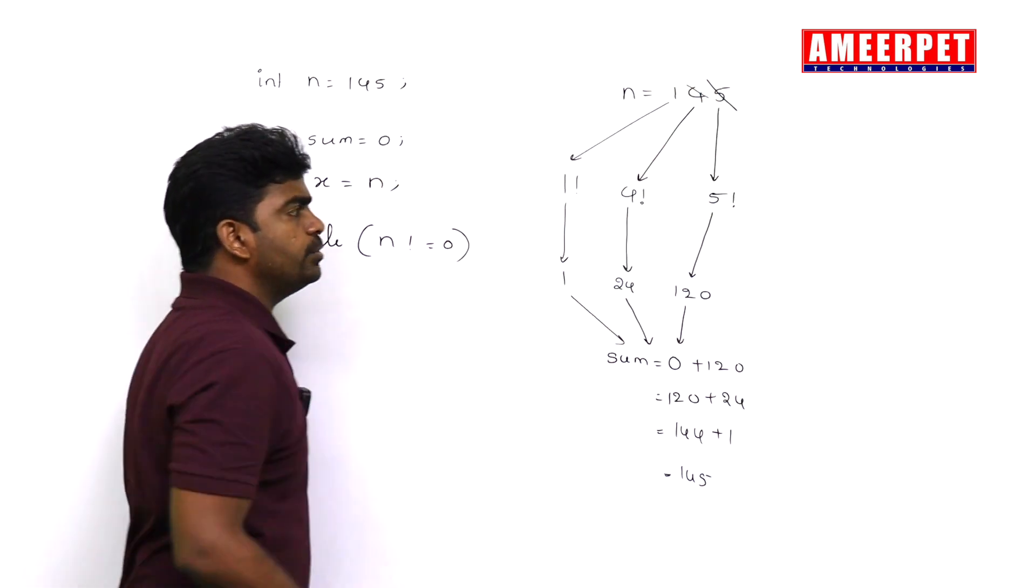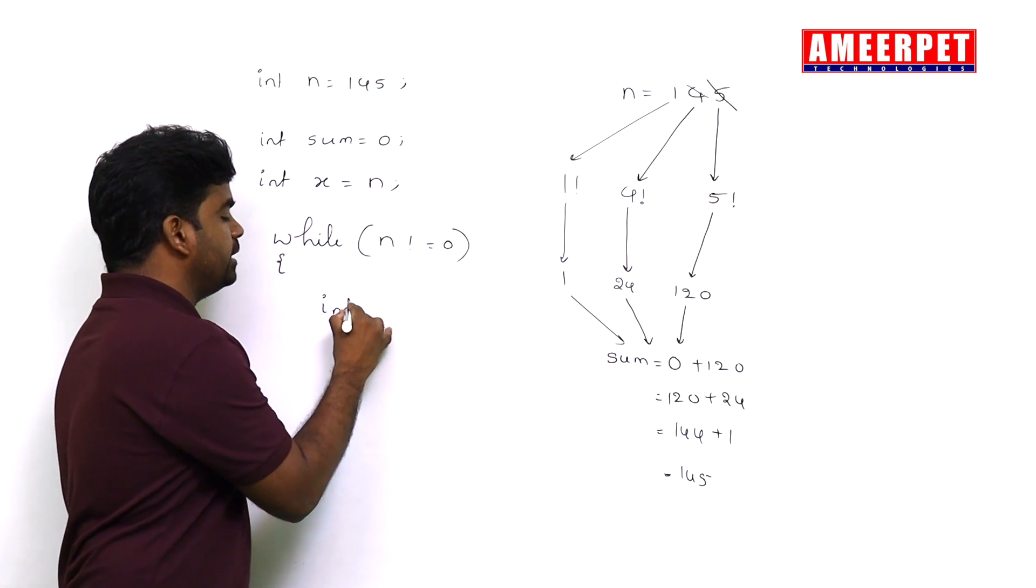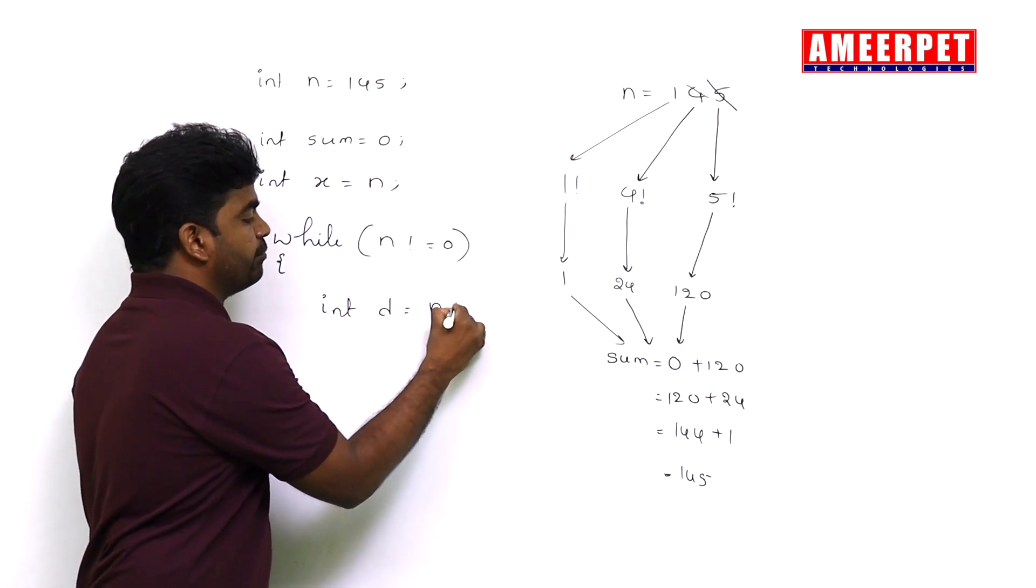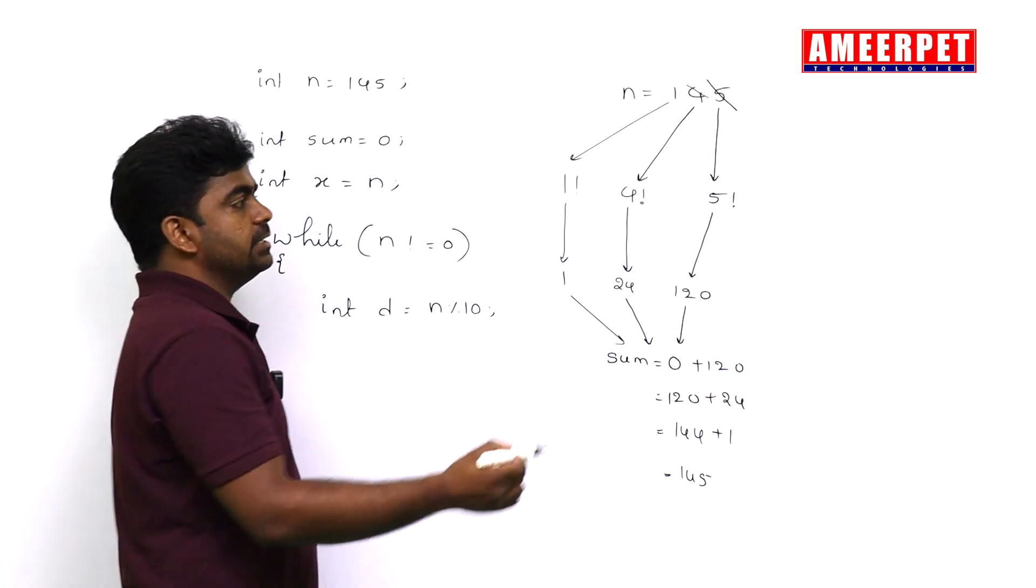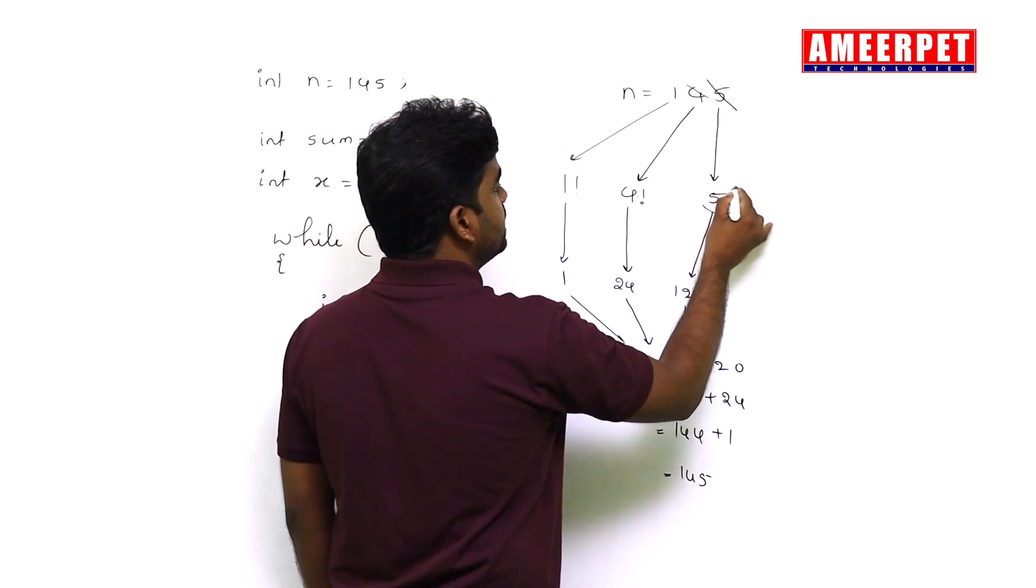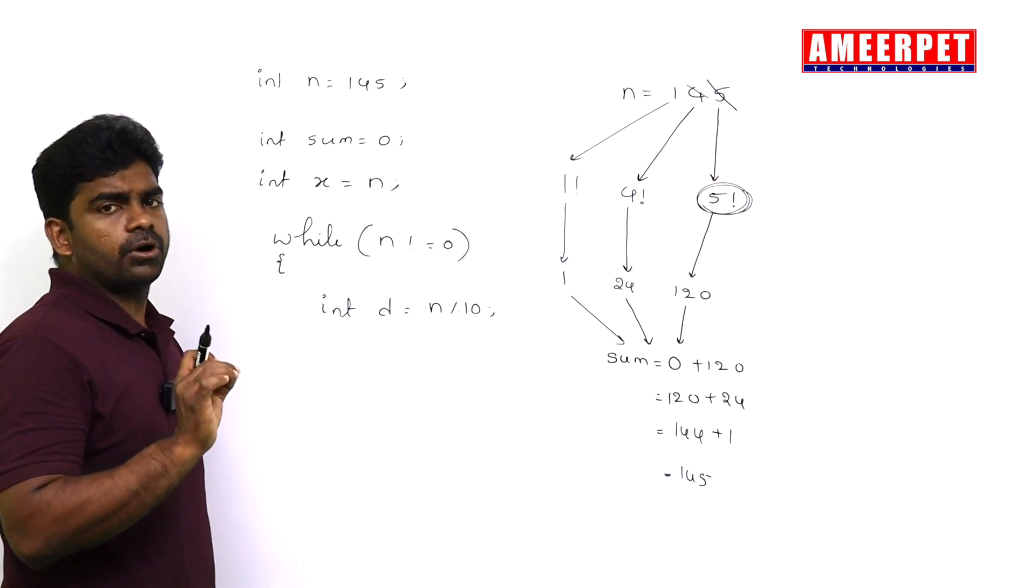Getting the digit: how will you get the digit? Simple, n mod 10. By performing n mod 10 operation, we are getting the digit. After getting the digit, find the factorial for that digit.